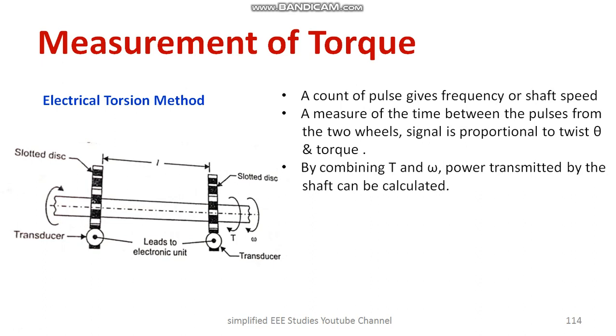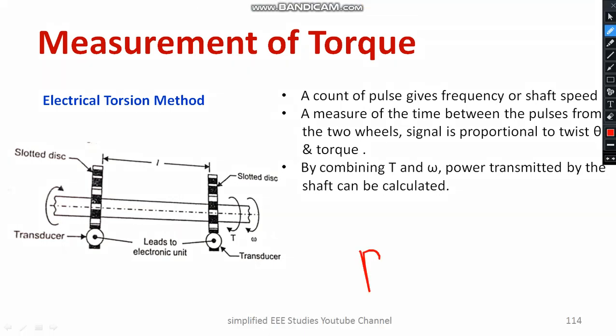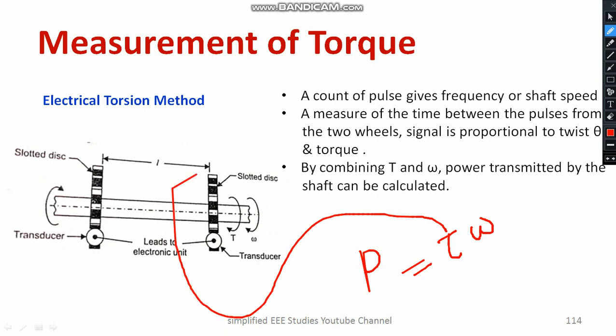By combining torque and omega, power can be determined: P equals tau into omega, so shaft power can also be calculated. The torque is measured using the slotted disc — the count is directly proportional to the torque. That is how torque is measured using the electrical torsion method.